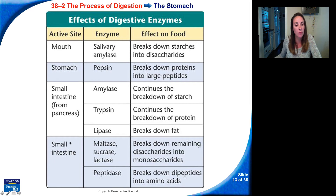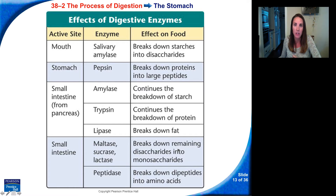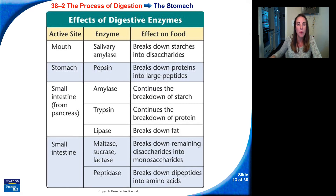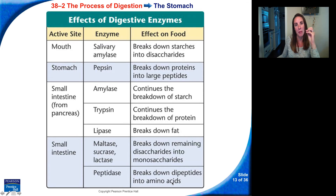In chemical digestion in the small intestine, there are four main enzymes. Maltase, sucrase, and lactase all break down carbohydrates to even simpler forms like glucose — all the way down to the glucose molecule. Peptidase breaks down dipeptides into amino acids, which is the last step in breaking down proteins. So from the mouth to the small intestines, we go from whole food all the way down to the very basic molecules: amino acids for proteins and monosaccharides for carbohydrates.